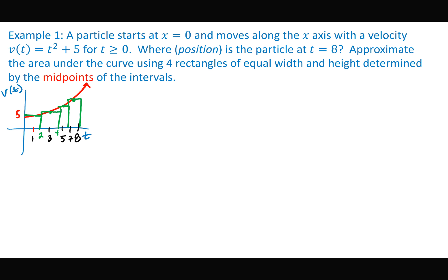Being midpoints is specific — we want midpoints at 1, 3, 5, and 7; 8 would be an endpoint, not a midpoint. To find the area under the curve, we add up the areas of all rectangles. Area of rectangle one: v(1) times 2. v(1) = 1 + 5 = 6, times 2 gives 12.